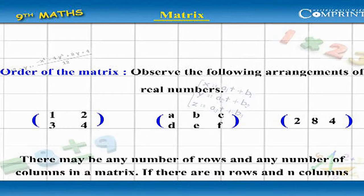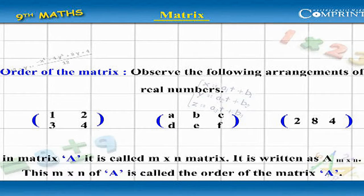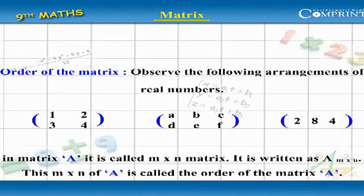If there are m rows and n columns in matrix A, it is called an m by n matrix, written as A m×n. This m×n of A is called the order of the matrix A.